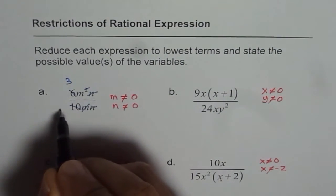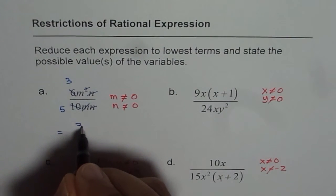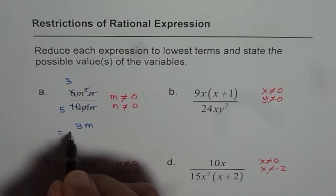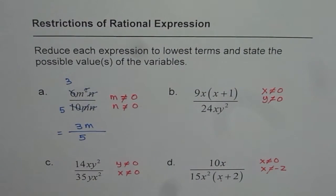This by 2, I get 5. With that, we get the lowest term which is 3M in the numerator and 5 in the denominator. So that is how you can reduce each rational expression to lowest terms.